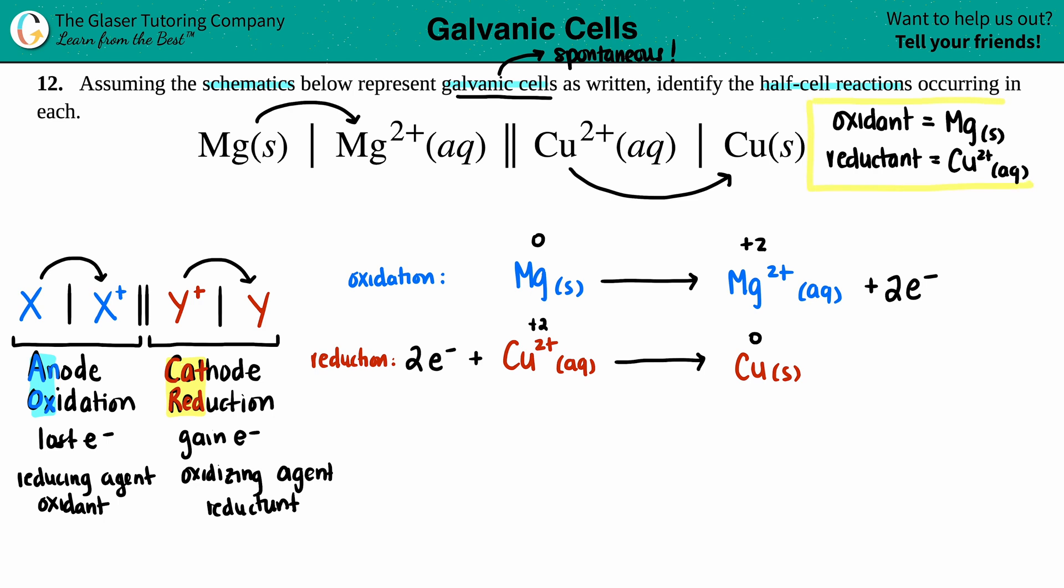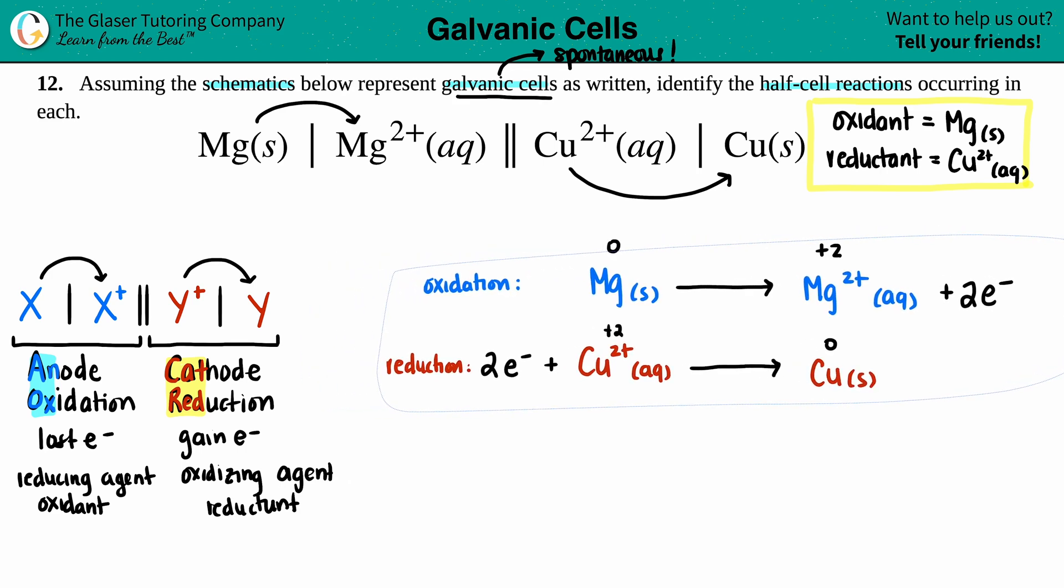And then last but not least, what we should do is just make this into one equation. Now, whenever you want to make this into one equation, we just add it together. But remember, those electrons have to be the same. But thank goodness, two electrons here, two electrons here, they're already the same, so we can just add these right on up. So this will cancel and this will cancel once we add.